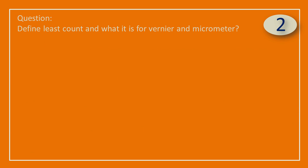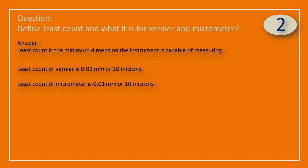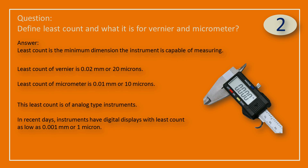Question: Define least count and what it is for Vernier and micrometer. Answer: Least count is the minimum dimension the instrument is capable of measuring. Least count of Vernier is 0.02 mm or 20 microns. Least count of micrometer is 0.01 mm or 10 microns. This least count is for analog type instruments. In recent days, instruments have digital displays with least count as low as 0.001 mm or 1 micron.